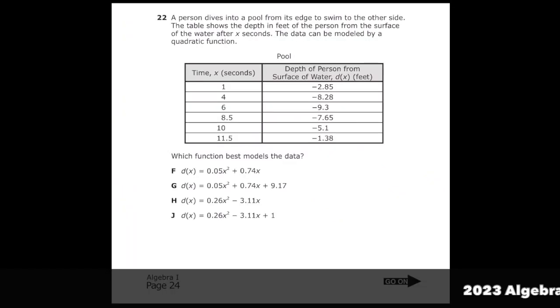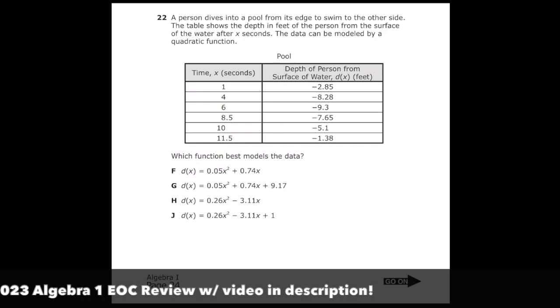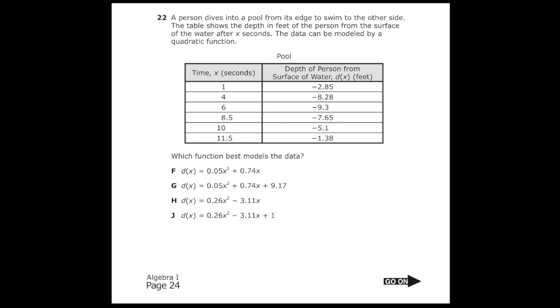This is number 22 from the 2022 Algebra 1 EOC. A person dives into a pool from its edge to swim to the other side. The table shows the depth in feet of the person from the surface of the water after X seconds. The data can be modeled by a quadratic function. Which function best models the data?